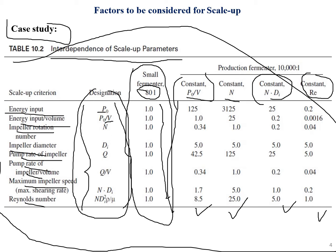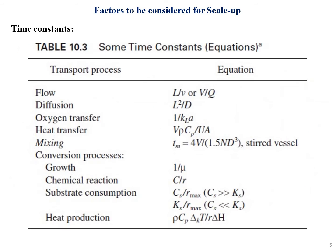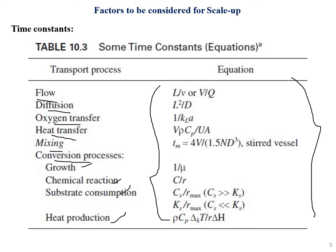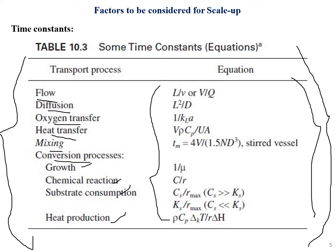There are also time constants relevant to scale up, including fluid diffusion, oxygen transfer, heat transfer, and mixing. Conversion processes can involve chemical reactions, substrate consumption, and heat production. The time constants are: growth = 1/μ; chemical reaction = Crc/rs; substrate consumption = Cs/rmax; heat production = ρ·Cp·ΔT / (r·ΔH).